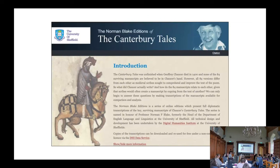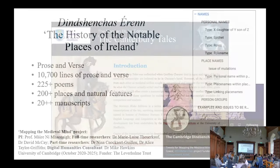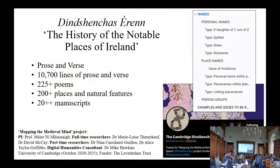So the question of the layout of an edition of the Acallam leads me to briefly focus on the tagging of personal and place names with TEI, using my work on the Mapping the Medieval Mind Project, which is based in Cambridge, in which I've been tagging names in the Dinnshenchas — the History of the Notable Places of Ireland — a medieval Irish corpus of texts about the origin of place names which is related to the Acallam.